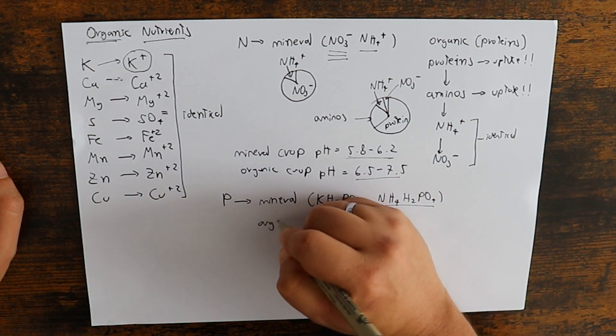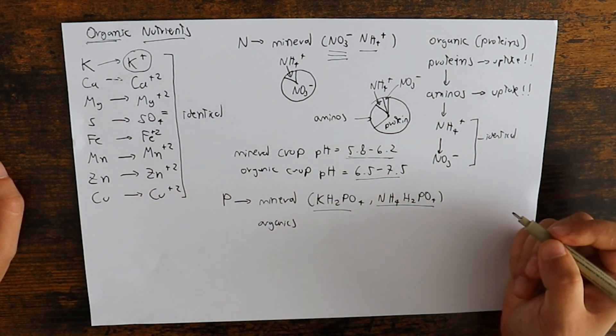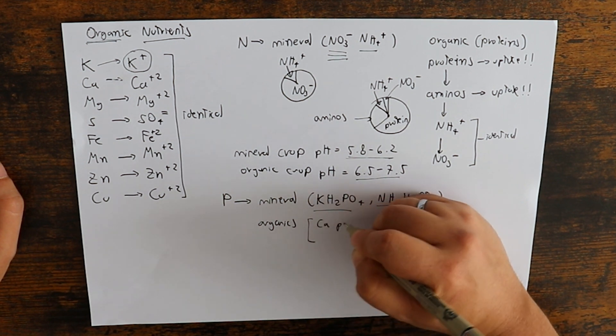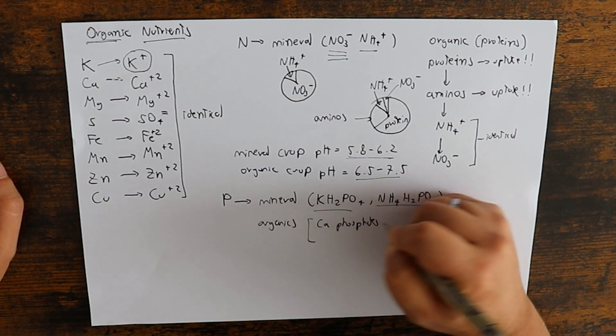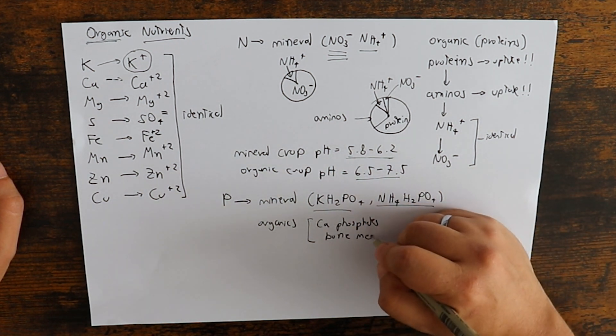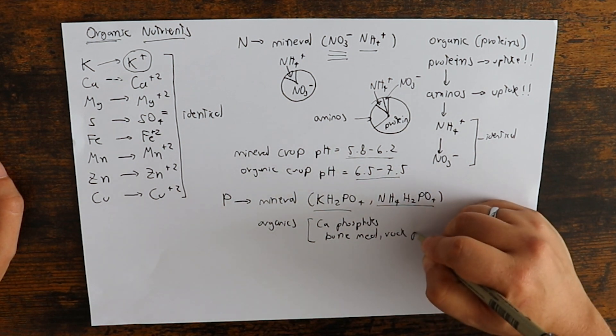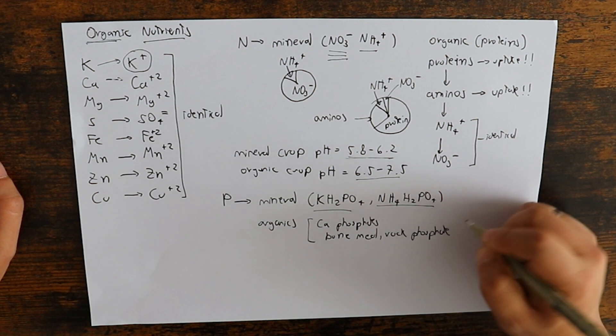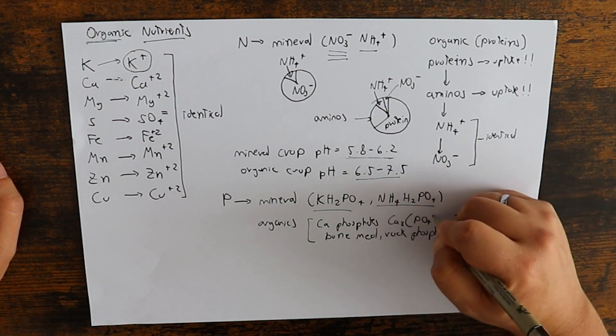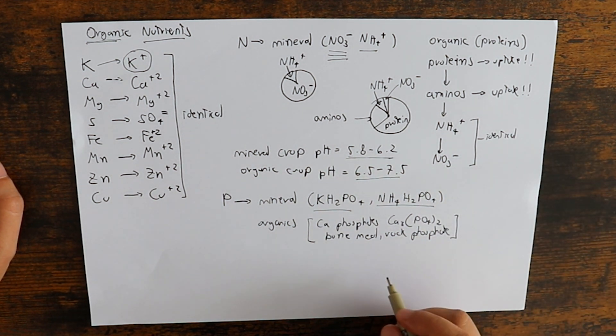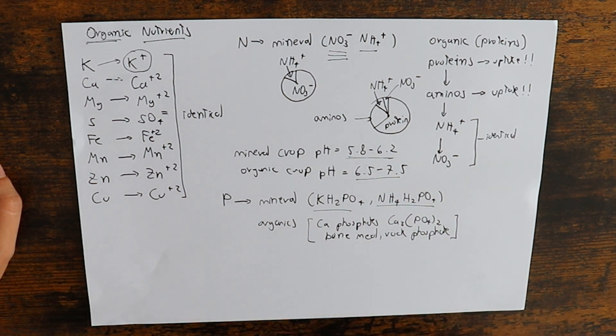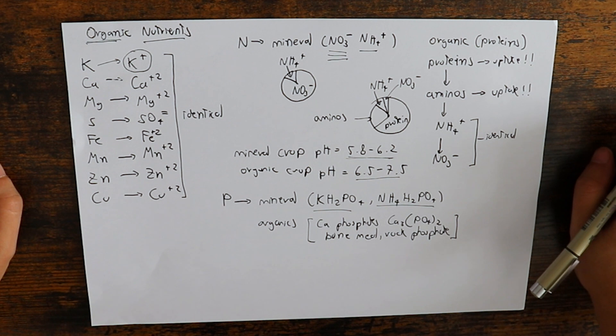So in organics, what tends to happen is that we use less soluble forms of phosphorus, mainly calcium phosphates, different types of calcium phosphates, which are generally things like bone meal or rock phosphate. So these are things of the calcium phosphate family. Although not exactly calcium phosphate because these minerals are different and they have a slightly different chemical composition. They are all basically insoluble calcium phosphates.